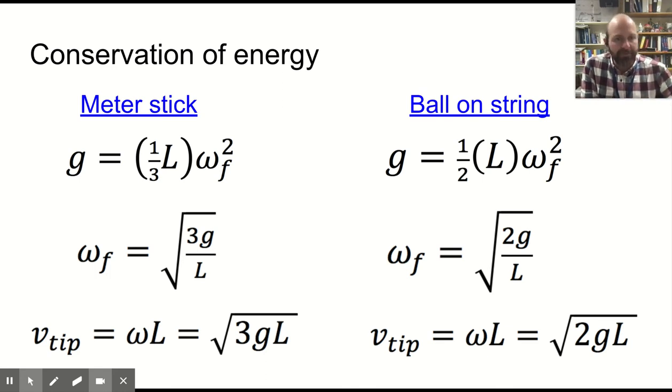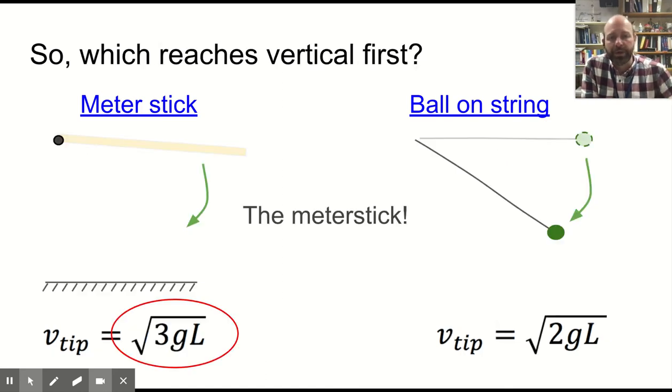Which is why if you're going faster at the end and you both started at zero, you must have a higher average velocity for the one with the higher final velocity, meaning the meter stick will win the race. The meter stick reaches the vertical first.